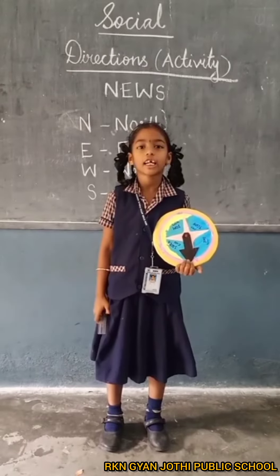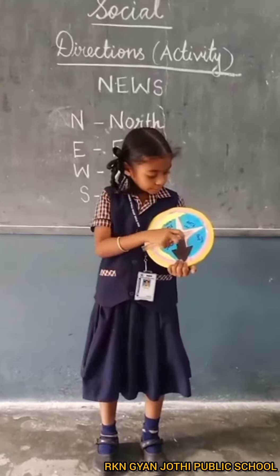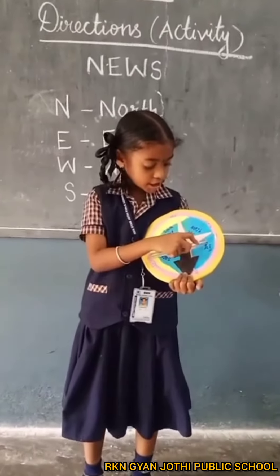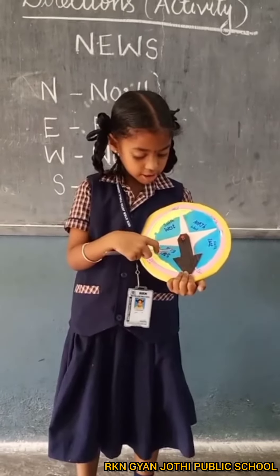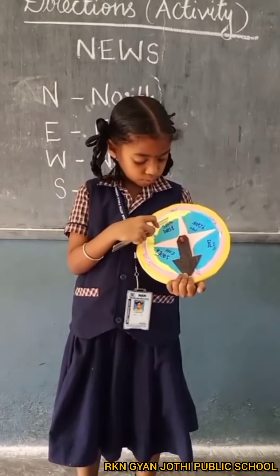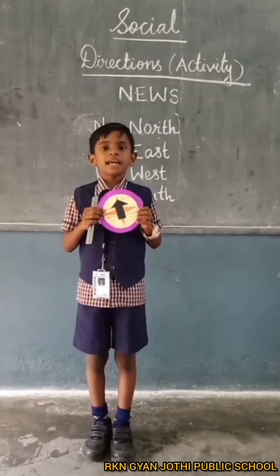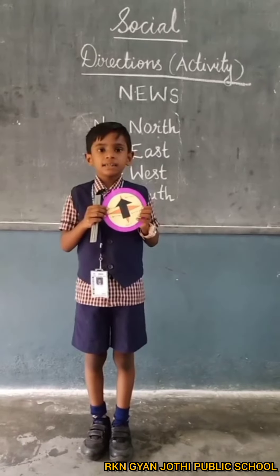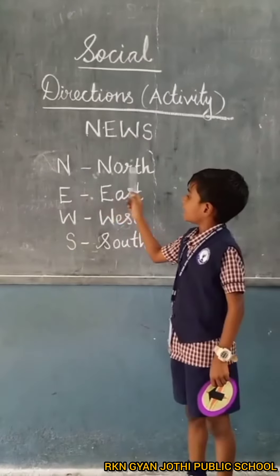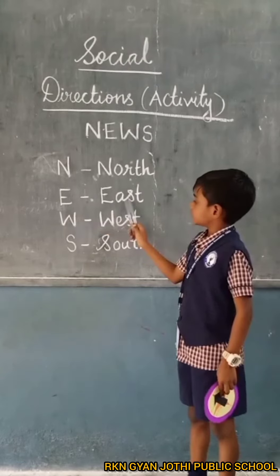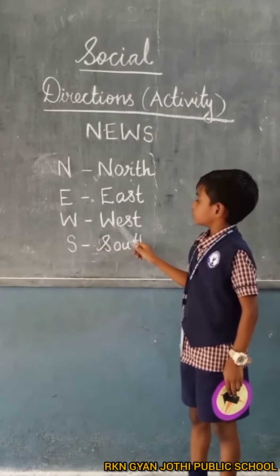Intermediate directions are North-East, South-East, South-West, and North-West. We can remember directions using the mnemonic NEWS: North, East, West, South.